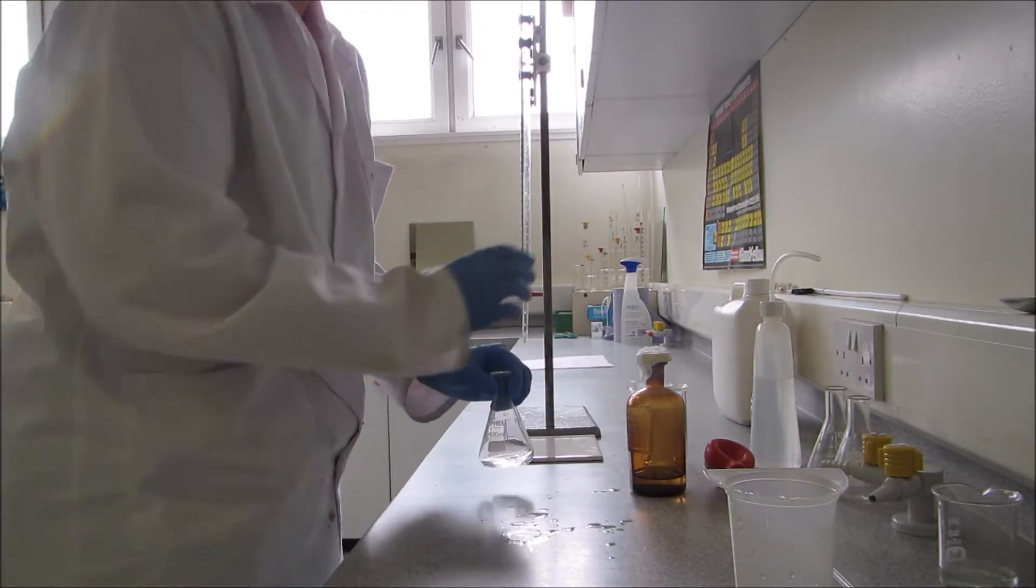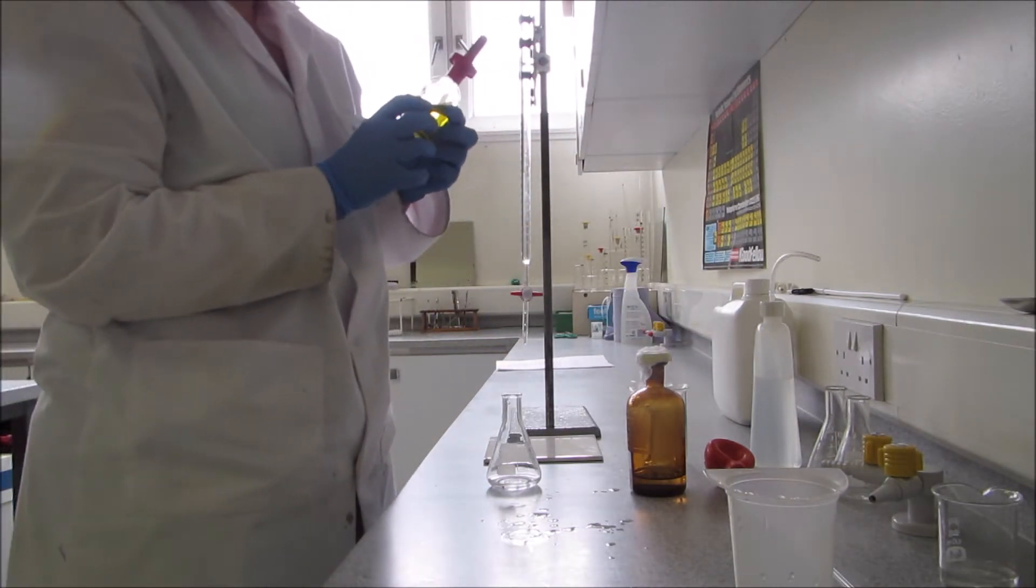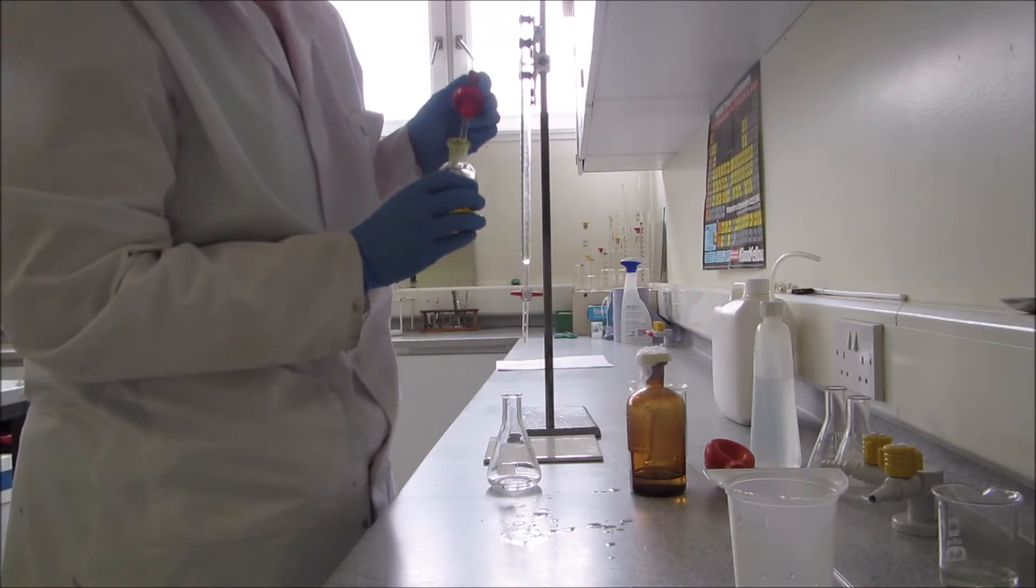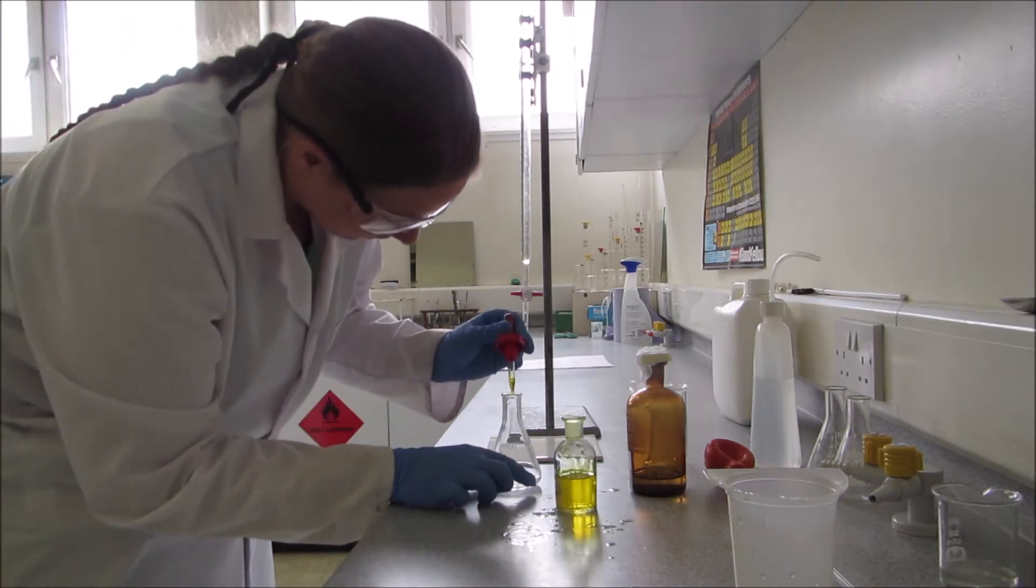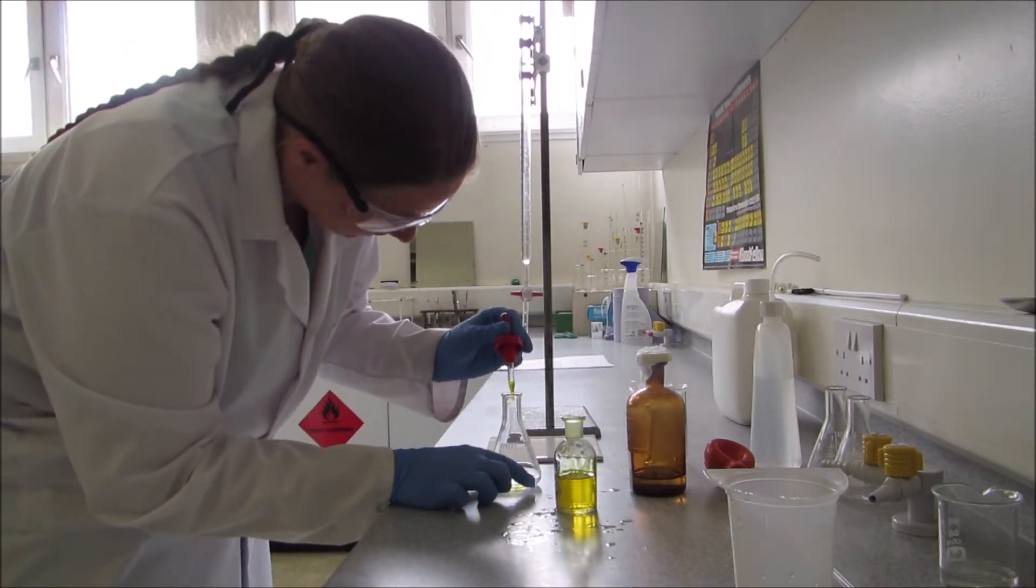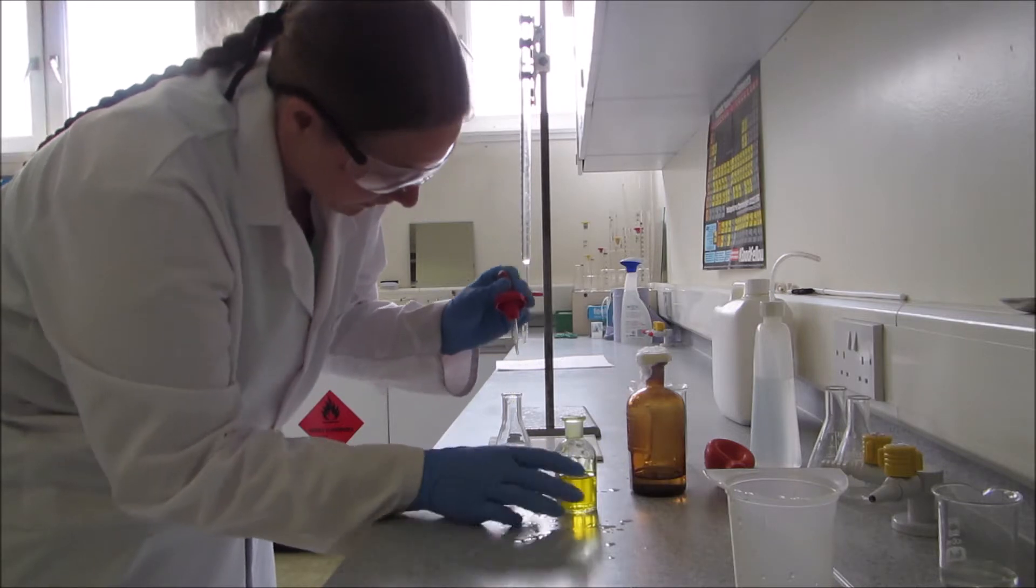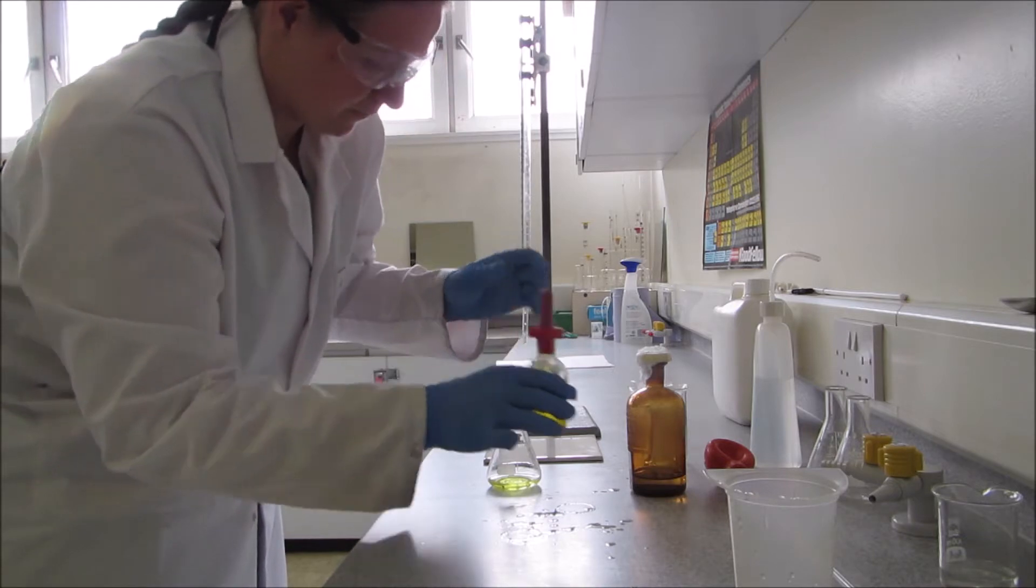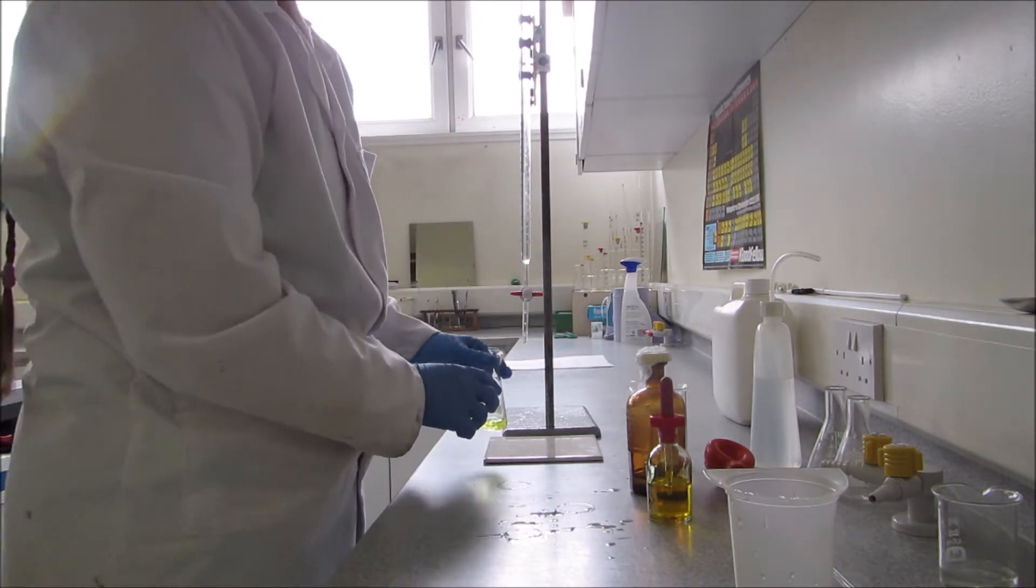Before I start the titration, you then have to add your indicator. For this experiment, potassium chromate indicator is used. It's also an irritant, so again, just be careful that you don't spill it. I'm going to add 10 drops. Give it a bit of a swirl to mix it, and you can see it's a yellow color to start with.